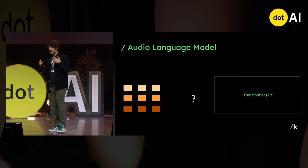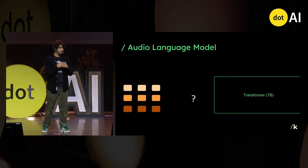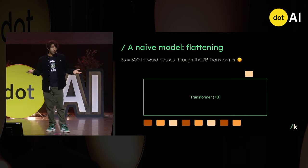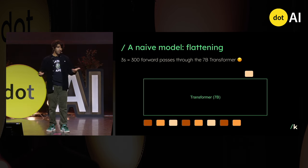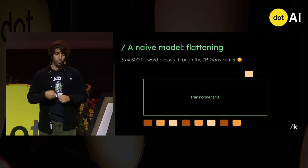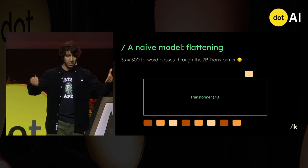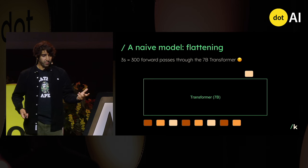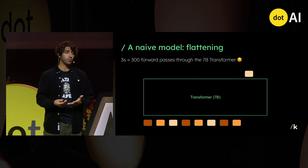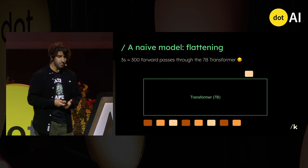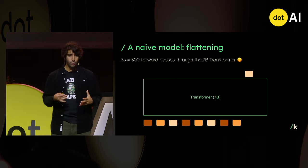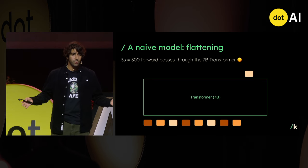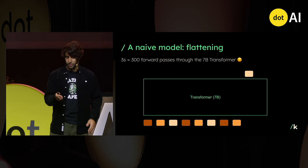The next question is how to feed this 2D grid to a transformer, which is a sequential model expecting a sequence of tokens. The most naive approach is flattening — take the 2D grid, flatten it, and compute predictions on the flattened sequence, similar to what is done for images. This enables generative modeling of audio. The problem is that at 12.5 Hz with eight detail levels, three seconds still gives you 300 tokens — much more than seven words. Early audio language models used this flattening technique but it only worked for around 10 seconds, since modeling a five-minute conversation would produce dozens of thousands of tokens — not scalable.